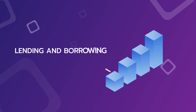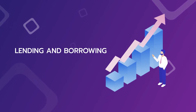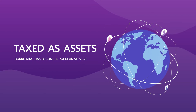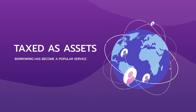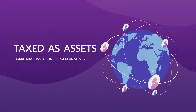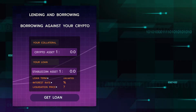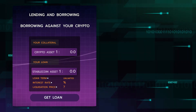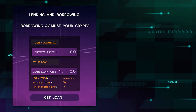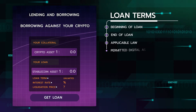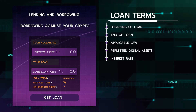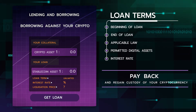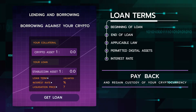Lending and borrowing: since cryptocurrencies are taxed as assets in many countries, borrowing has become a popular service, as you can retain your cryptocurrency while using it as collateral for a loan in another currency, such as a stablecoin. As long as you adhere to the terms of the loan, you can eventually pay it back and regain custody of your cryptocurrency.